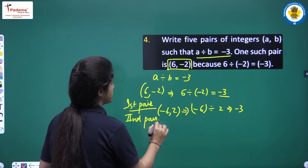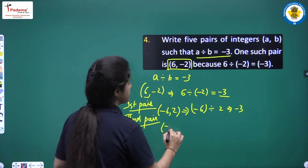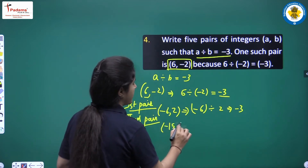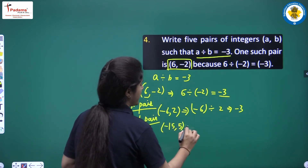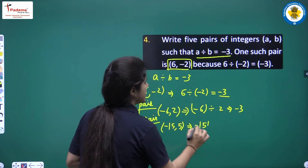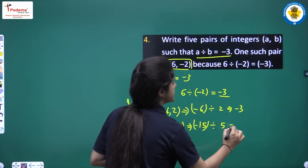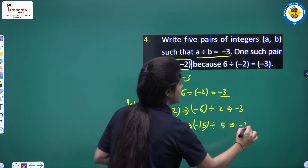The second pair is (-15, 5), because minus 15 divided by 5 equals minus 3.